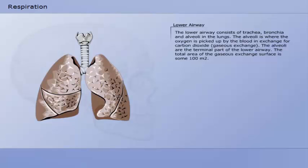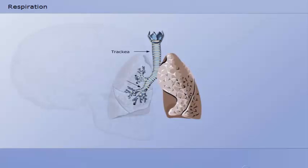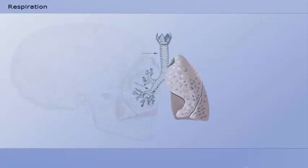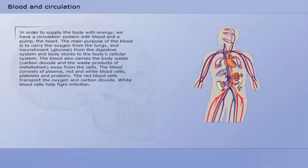The lower airways consist of trachea, bronchia, and alveoli in the lungs. The alveoli is where the oxygen is picked up by the blood in exchange for carbon dioxide. The alveoli are the terminal parts of the lower airways. The total area of the gaseous exchange surface is some 100 square meters.